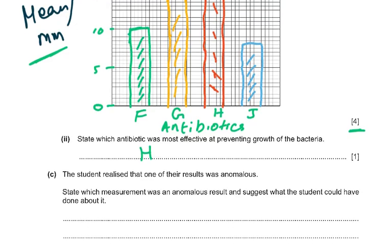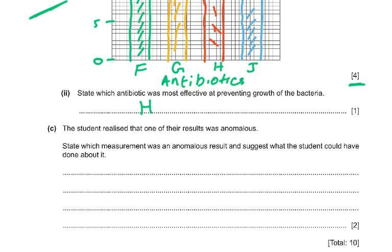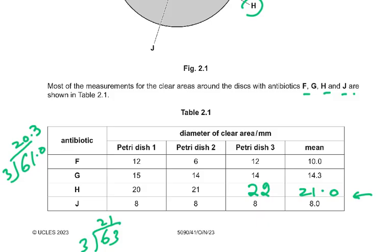The student realized that one of their results was anomalous. State which measurement was an anomalous result and suggest what the student could have done about it — that's two marks. Anomalous means a result that does not fit the trend. Looking at the data, in petri dish 2 the readings for antibiotic F were 12, 12, and 12 in the other dishes — but one reading was 6. That is the anomalous result.